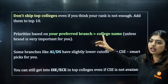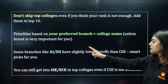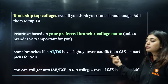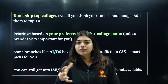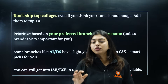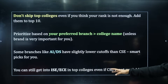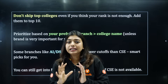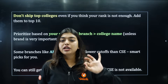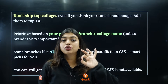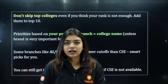Don't skip top colleges. Prioritize your preferred branch and college name — brand matters. Some branches like AI or Data Science have slightly lower cutoffs than CSE, so they're smart picks. AI at BIT sometimes closes at 800 while CS closes at 500. You can also choose Cyber Security. Even if CSE is not available, you can still get ISC or ECE in top colleges.